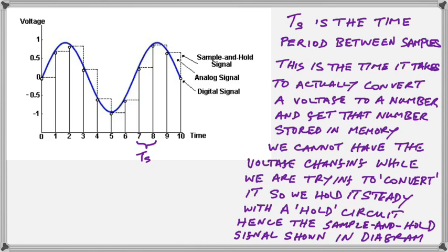So, that's what the sample and hold signal shown in the diagram refers to. You will see those little dashed lines are where we are holding that voltage constant until the next sample is taken, which produces that sort of stair-step pattern that you're seeing there on the actual signal.